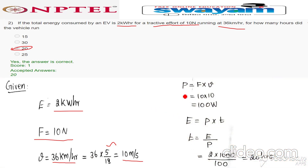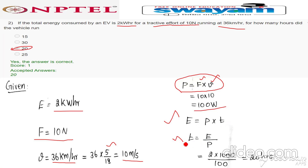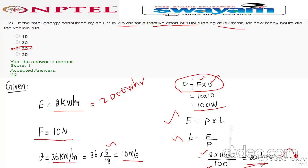The power relationship in terms of F and V: P is equal to F into V. We know F is 10 and velocity is 10, so 10 into 10 gives 100 watts. Using the energy relation, energy is equal to power into time, so time equals energy divided by power. Energy is 2 kilowatt hour equal to 2000 watt hour, divided by power 100, giving the answer 20 hours.